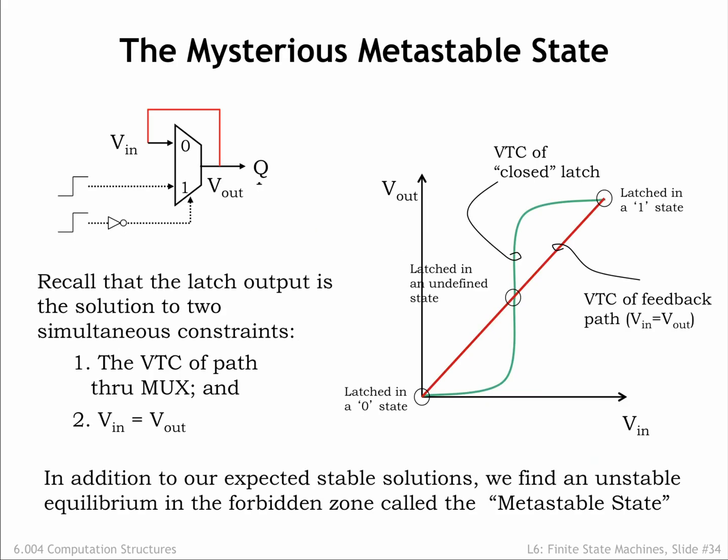Recall that the master latch is really just a lenient MUX that can be configured as a bistable storage element using a positive feedback loop. When the latch is in memory mode, it's essentially a 2-gate cyclic circuit whose behavior has two constraints: the voltage transfer characteristic of the 2-gate circuit, shown in green on the graph, and that Vin equals Vout, a constraint that's shown in red on the graph. These two curves intersect at three points.